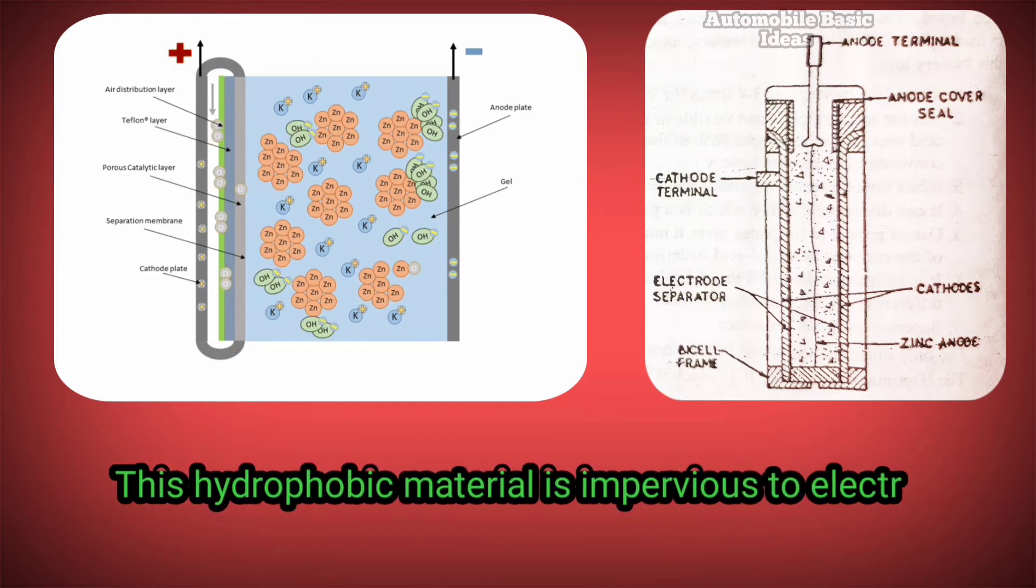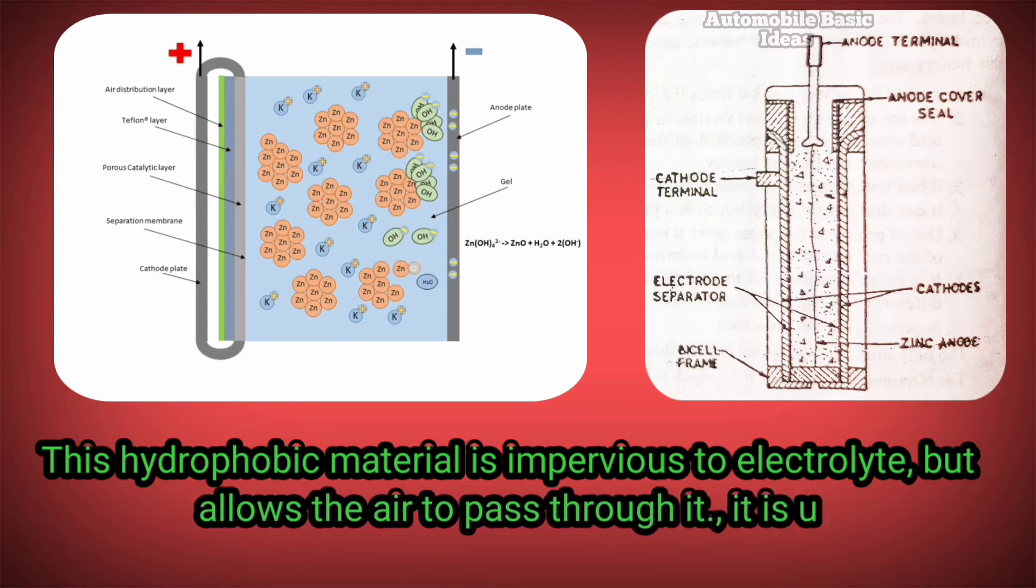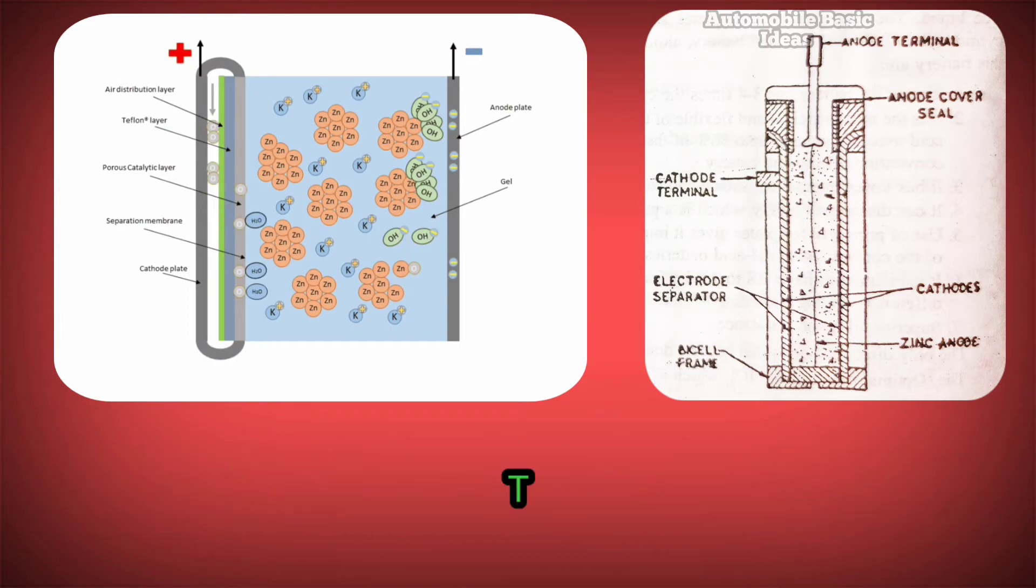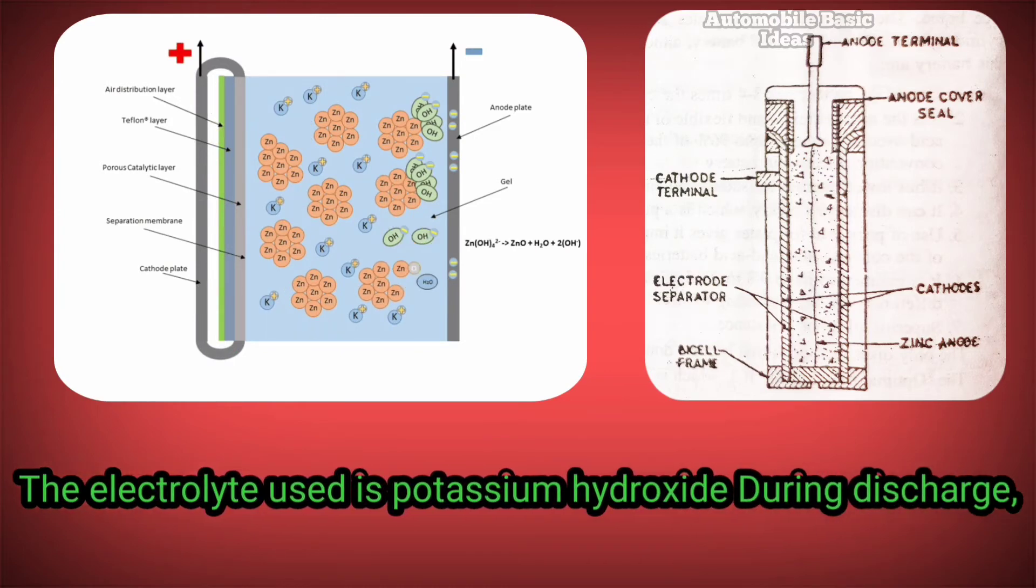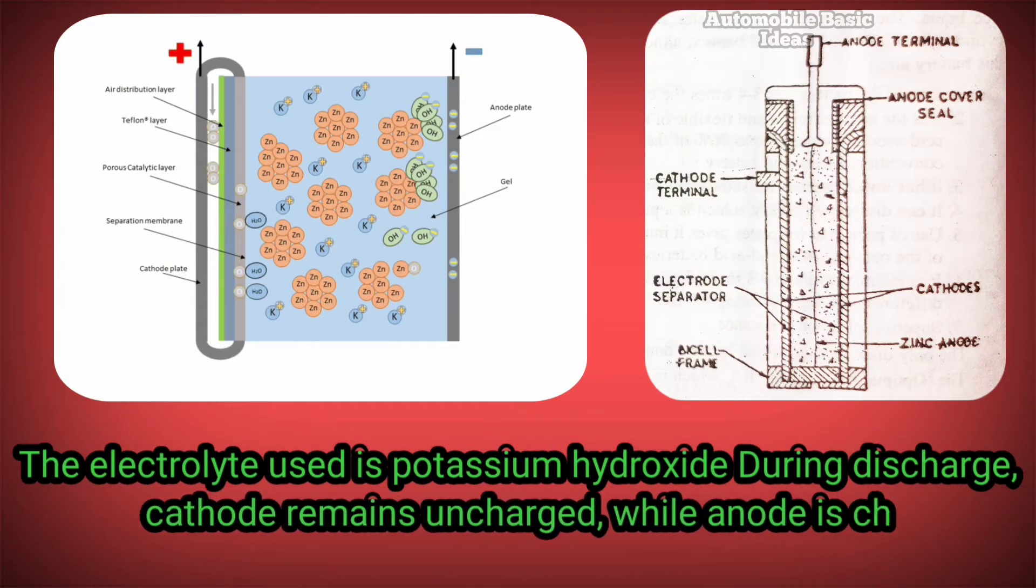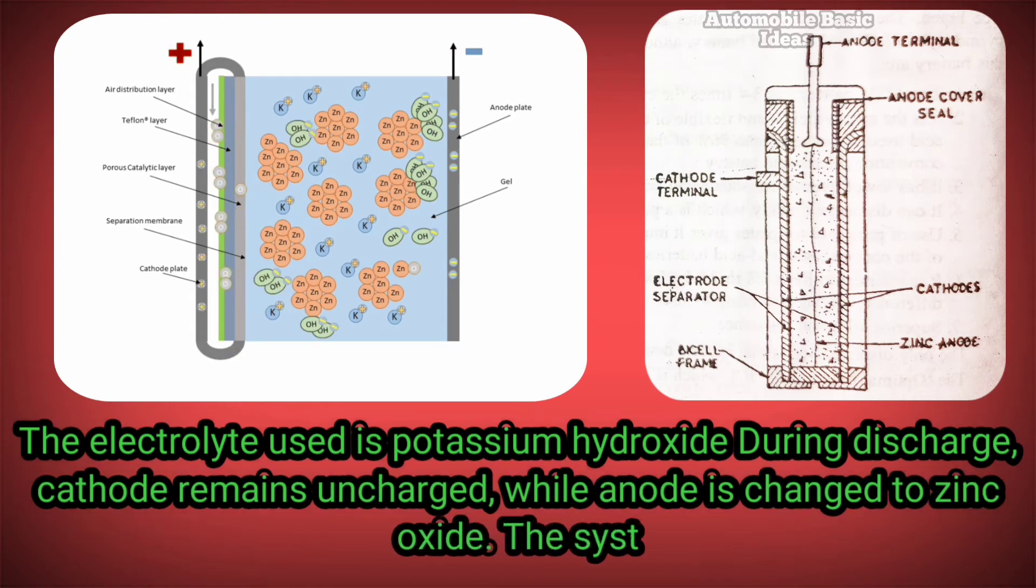is impervious to electrolyte but allows air to pass through. It is also used as a container. The electrolyte used is potassium hydroxide. During discharge, the cathode remains uncharged while the anode is changed to zinc oxide. The system has an open circuit voltage